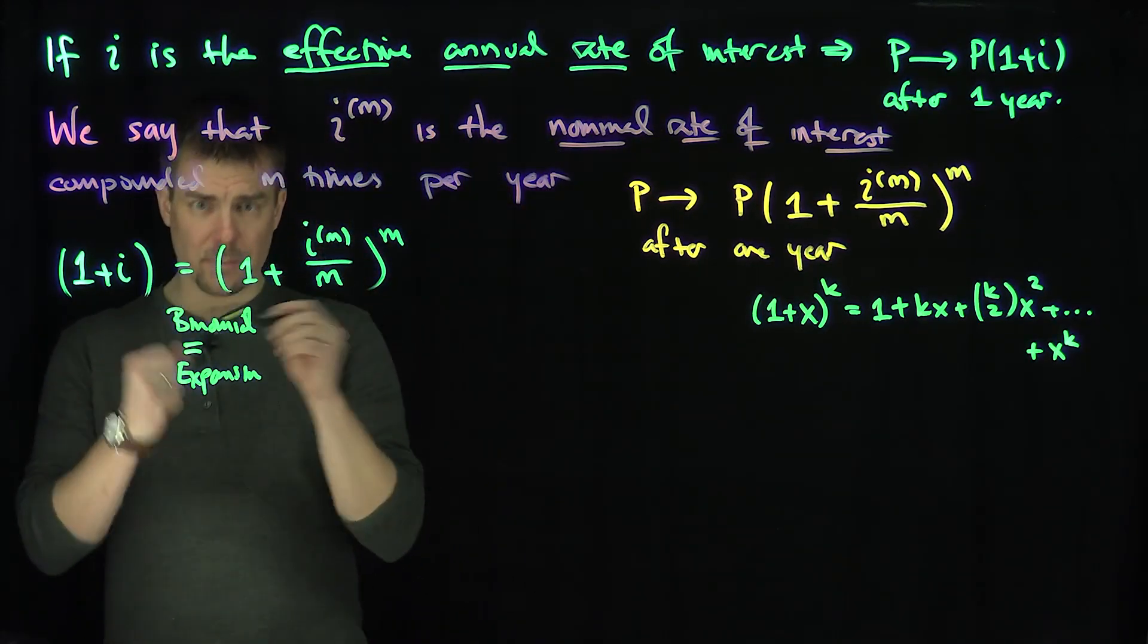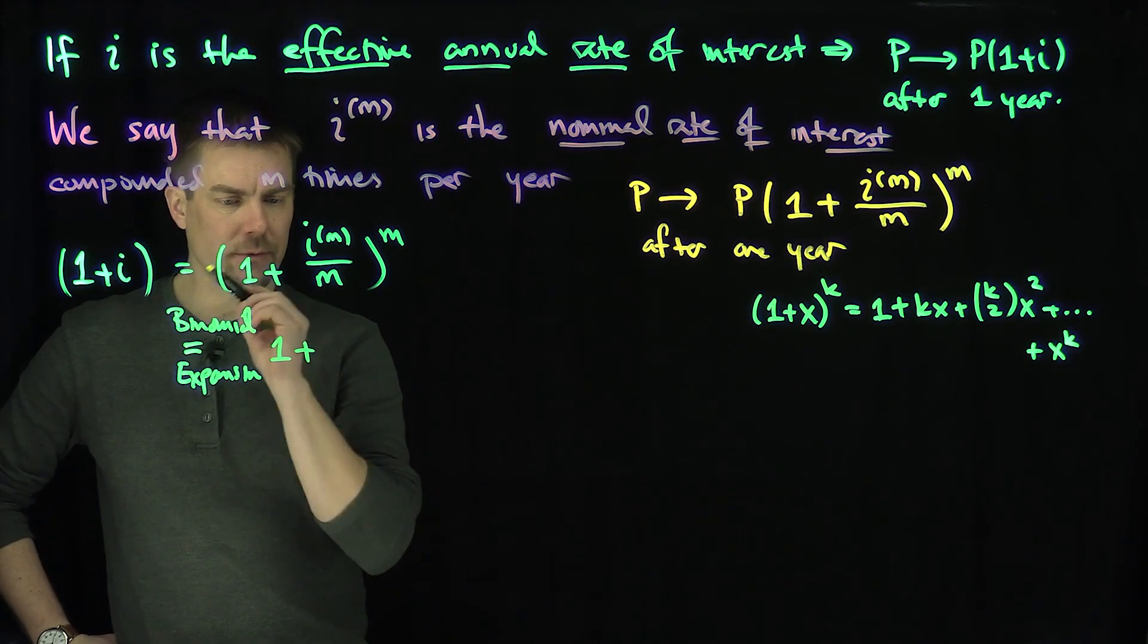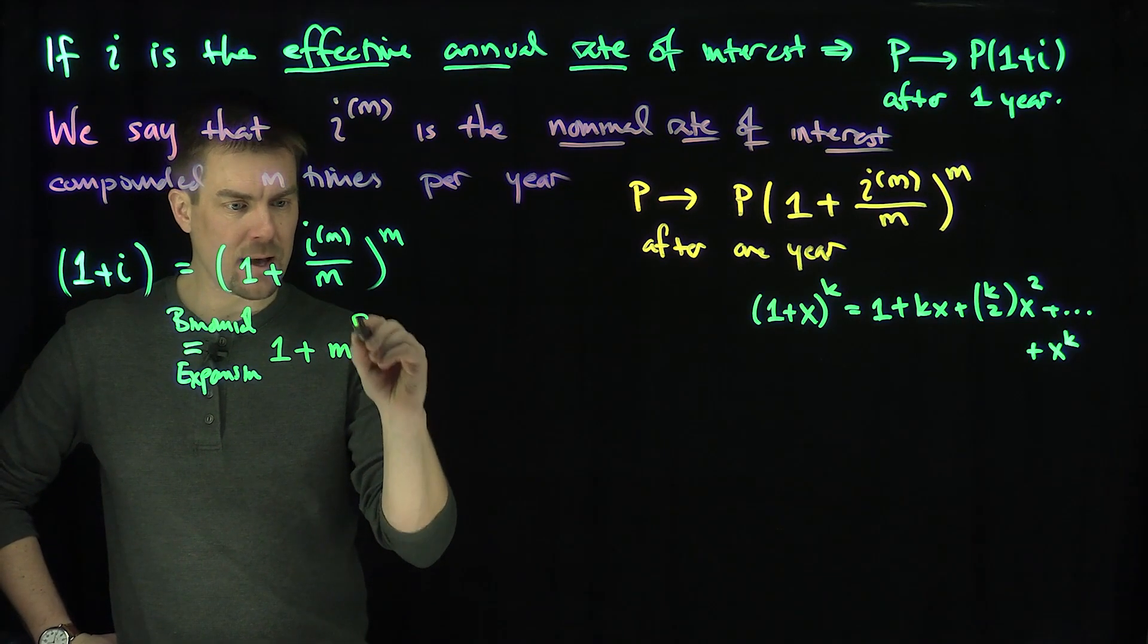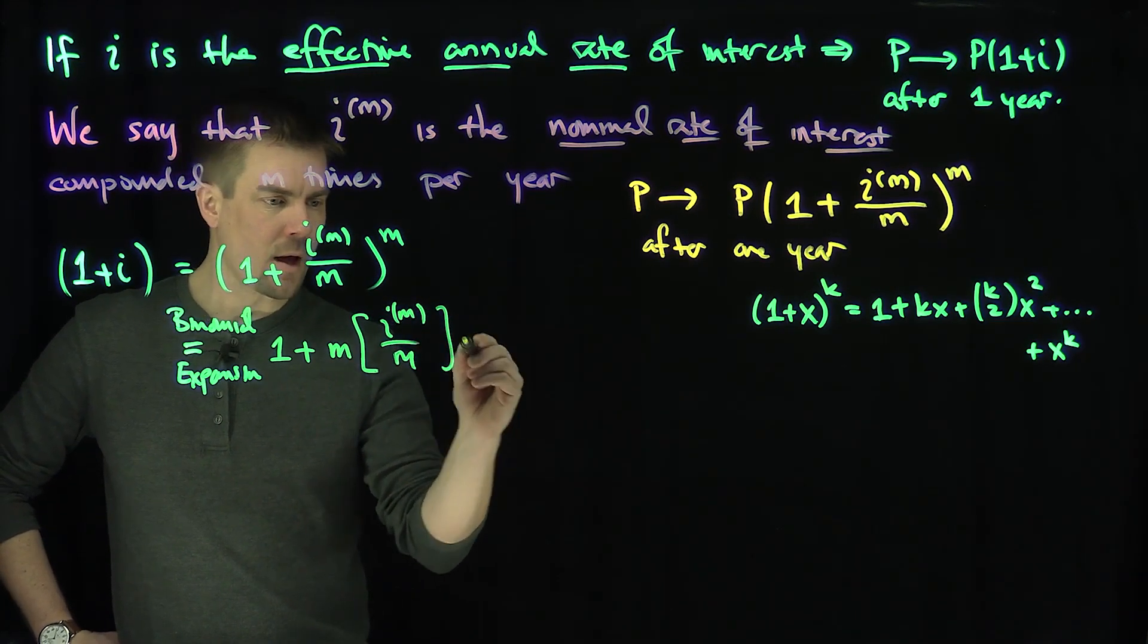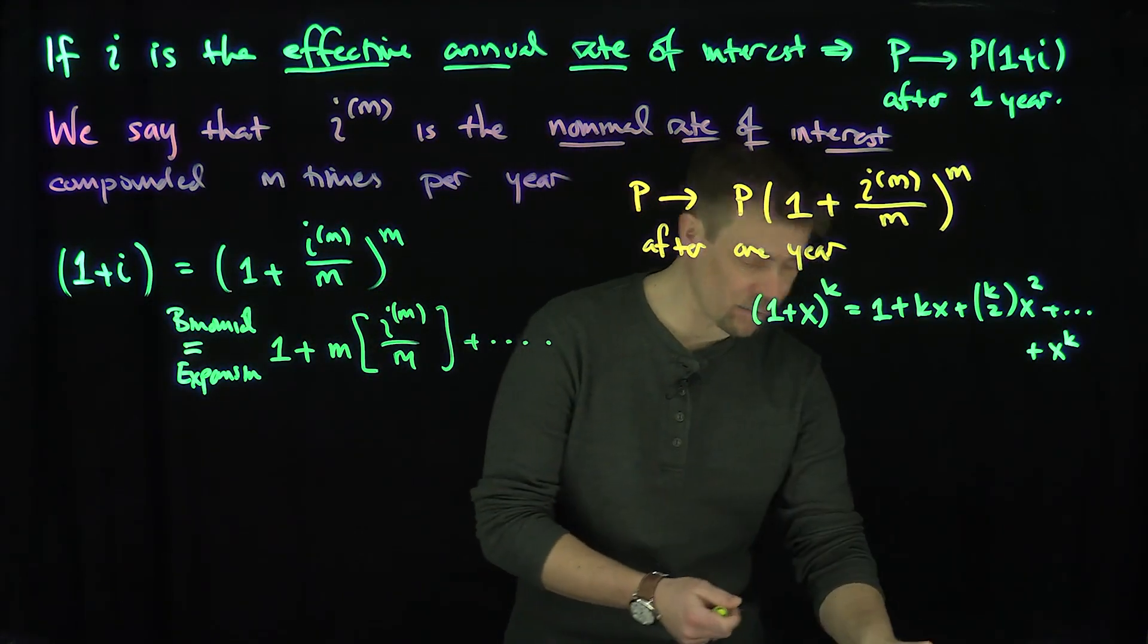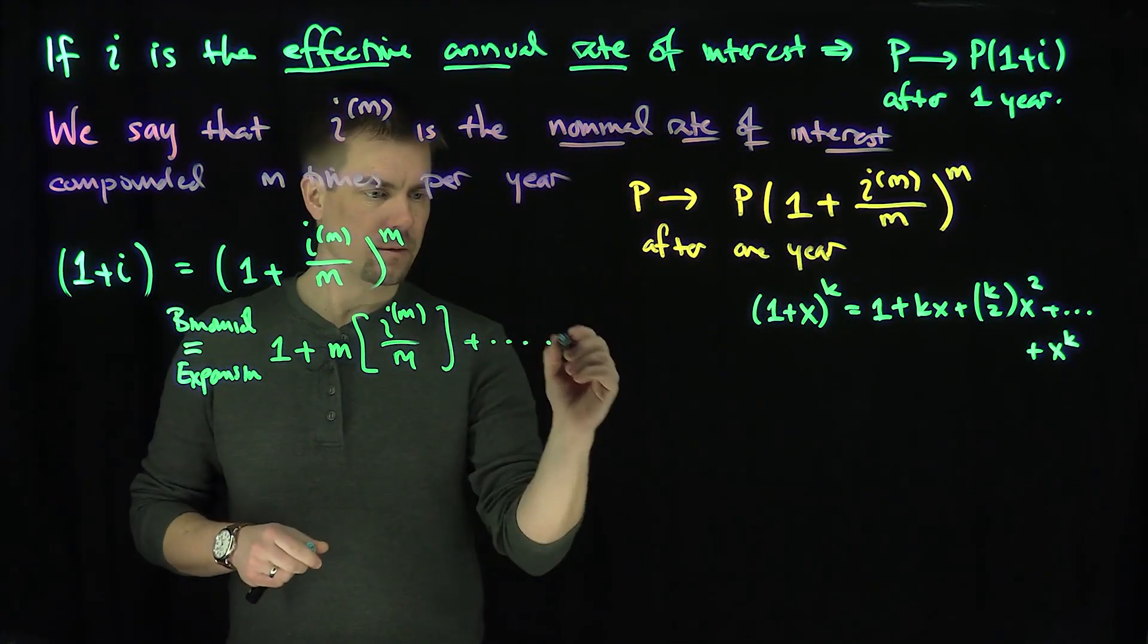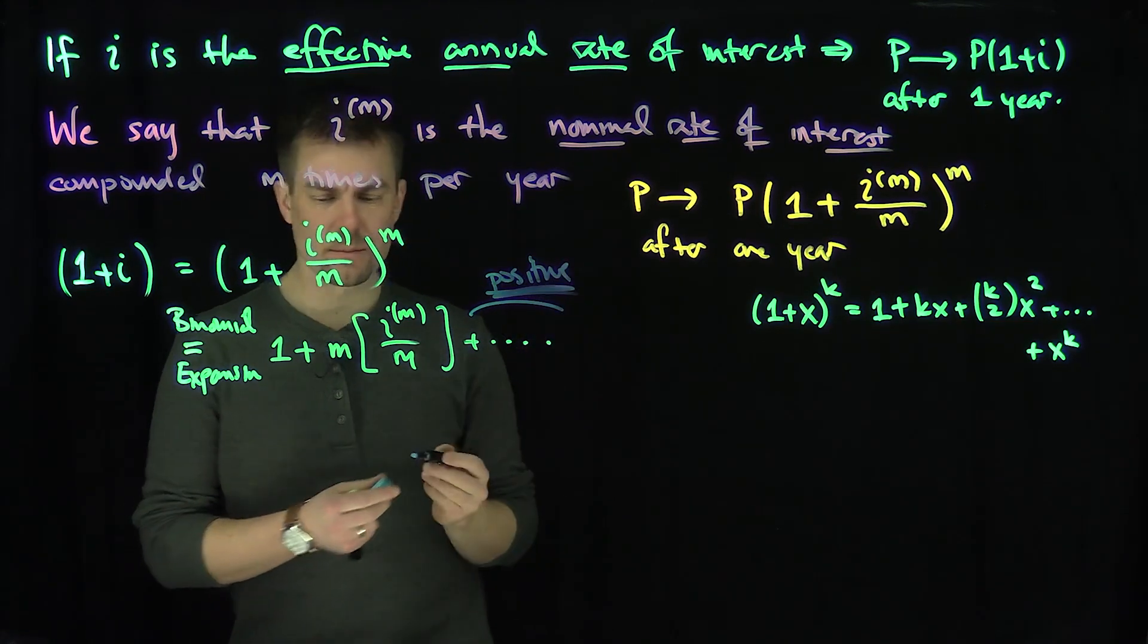So if I use the binomial expansion here, I'm just going to have the first couple terms. We'll have 1, plus m times i_m/m, plus the other terms. These other terms over here are positive.